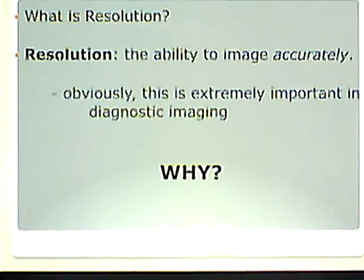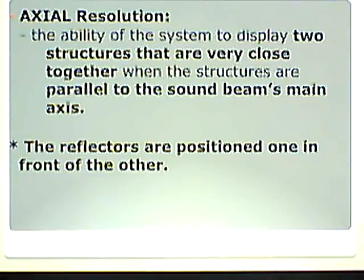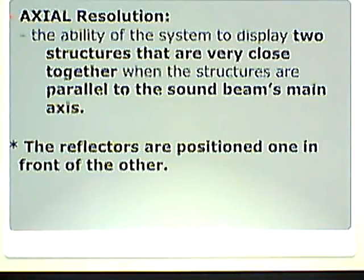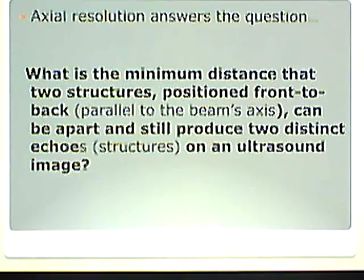Axial resolution is the ability of the system to display two structures that are very close together when those structures are parallel to the sound beam's main axis — meaning they are front to back. They're not straddling the line or going across it — that would be perpendicular. Just like looking from the front of a room to the back, the reflectors are positioned one in front of the other. Axial resolution answers: what is the minimum distance to still see two structures as distinct?